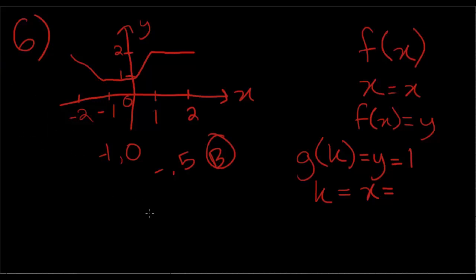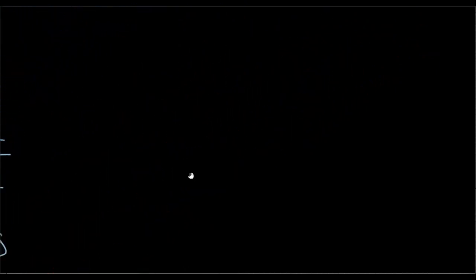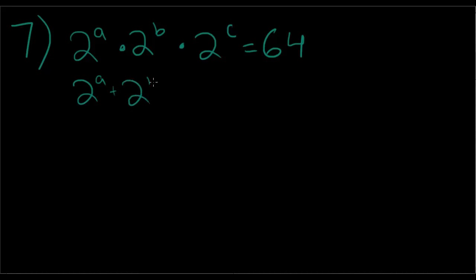Number 7 has to do with exponents. I've reached the bottom of the page. We'll just move to the other side, and then we'll continue onward. So right here, number 7, if a, b, and c are different positive integers, and 2 to the a times 2 to the b times 2 to the c is equal to 64. We can rewrite this as 2 to the a plus b plus c.